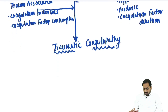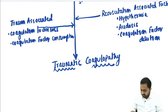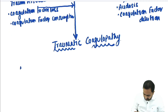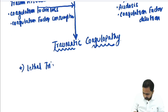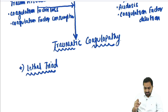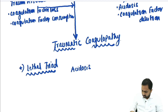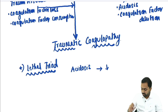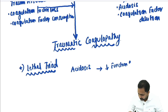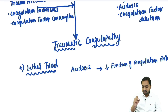The important thing here is the lethal triad discussed in the resuscitation-associated factors. The lethal triad consists of acidosis, coagulopathy, and hypothermia. Because of acidosis, there is decreased function of coagulation proteases, which causes coagulopathy.